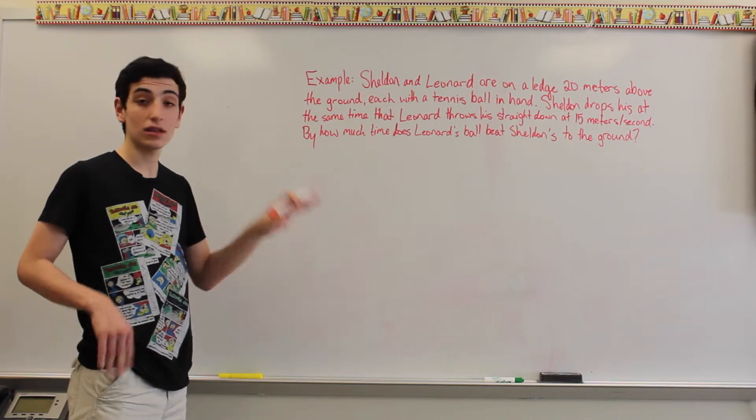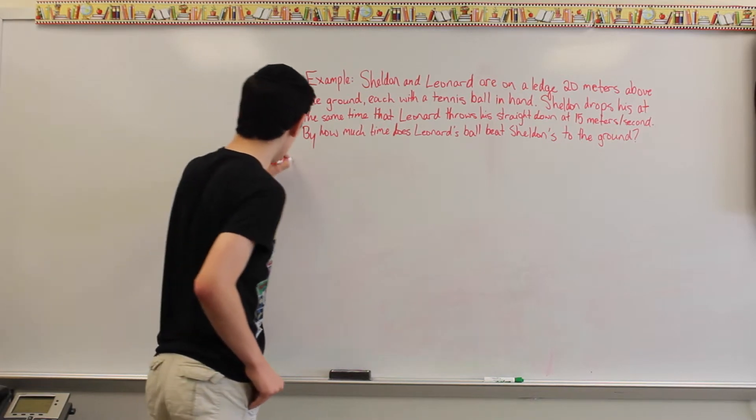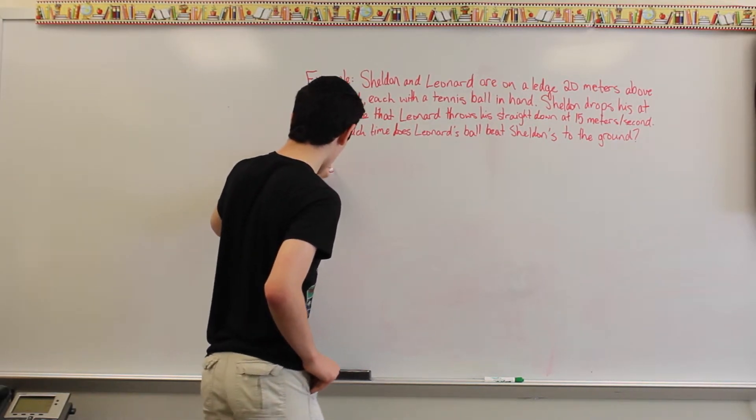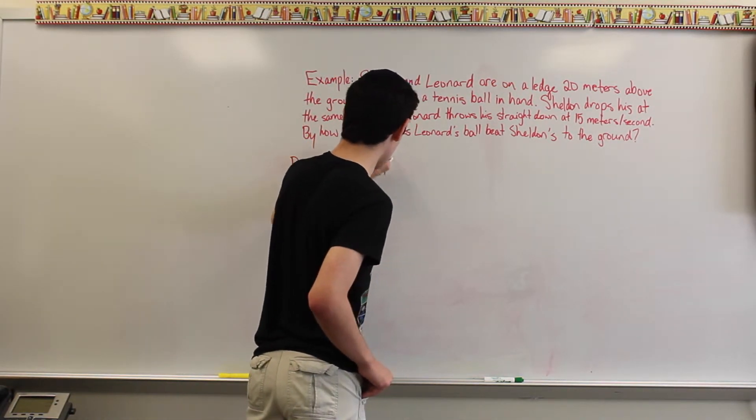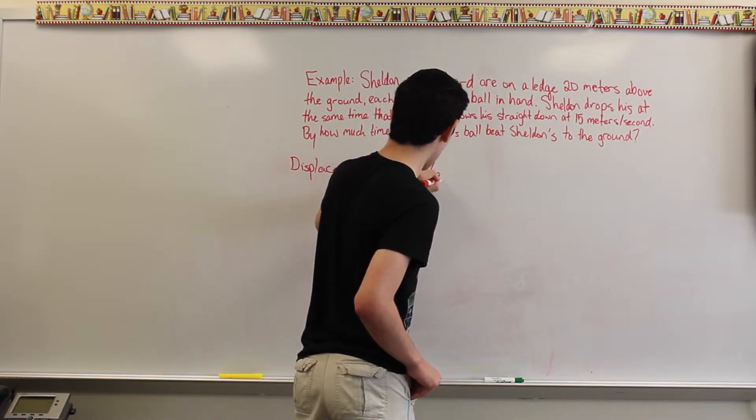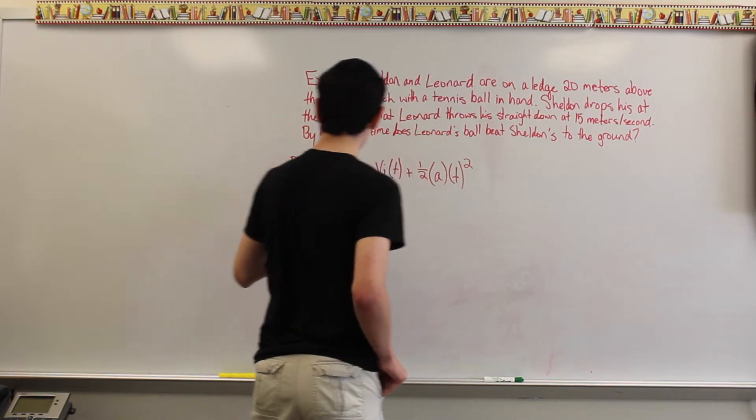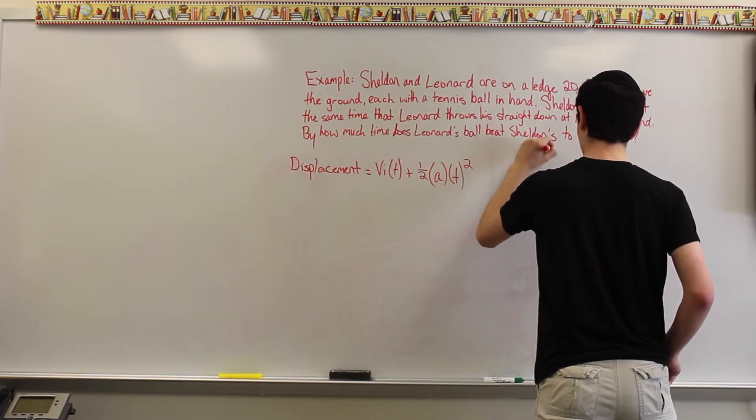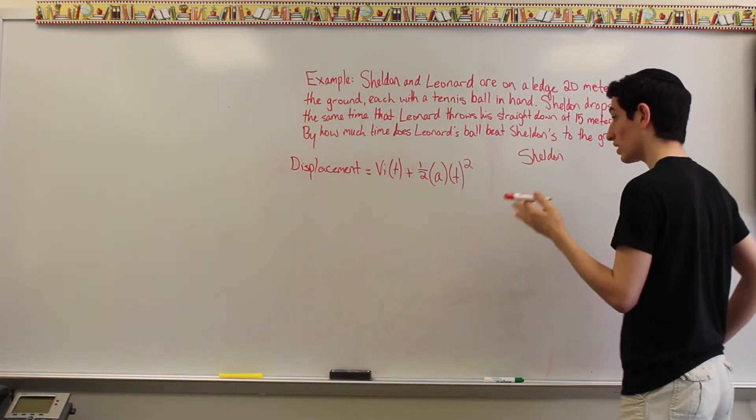Now in order to do this, first we're going to have to find each value separately. So our equation in order to find a displacement or distance is displacement equals initial velocity times time plus half times acceleration times time squared. So, if we put Sheldon as one value, let's solve for him first. The displacement in both cases is 20 meters, because it's 20 meters above the ground and then it hits the ground.